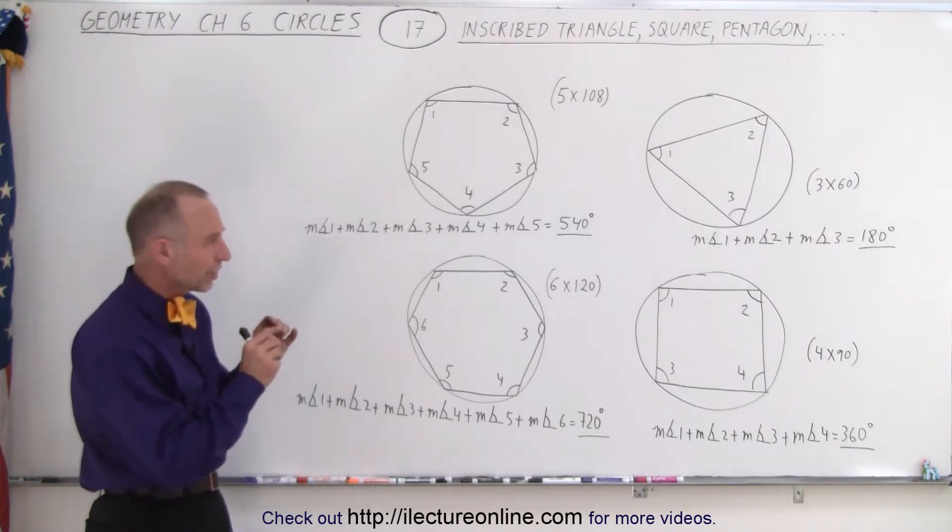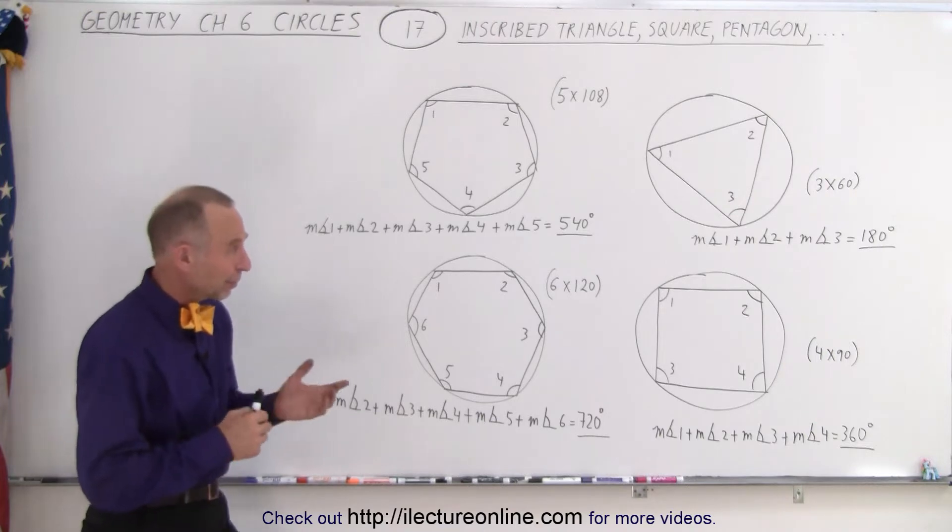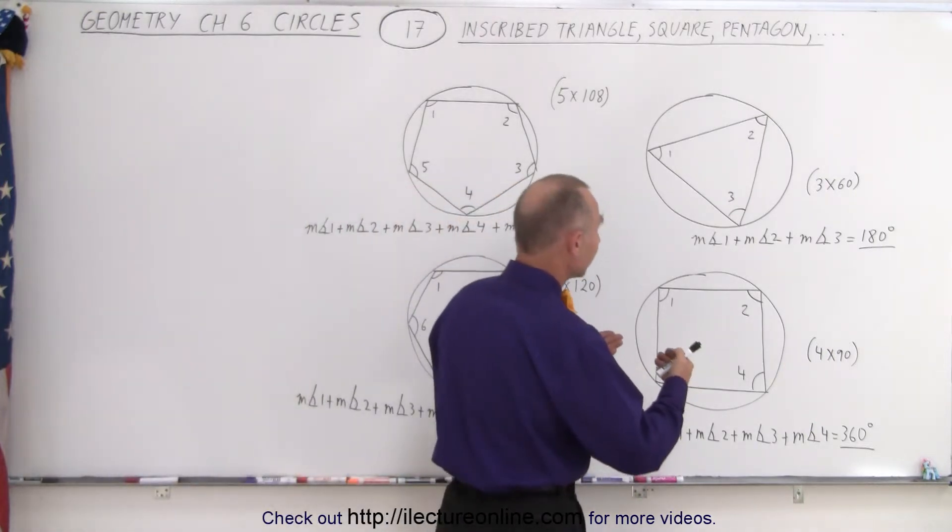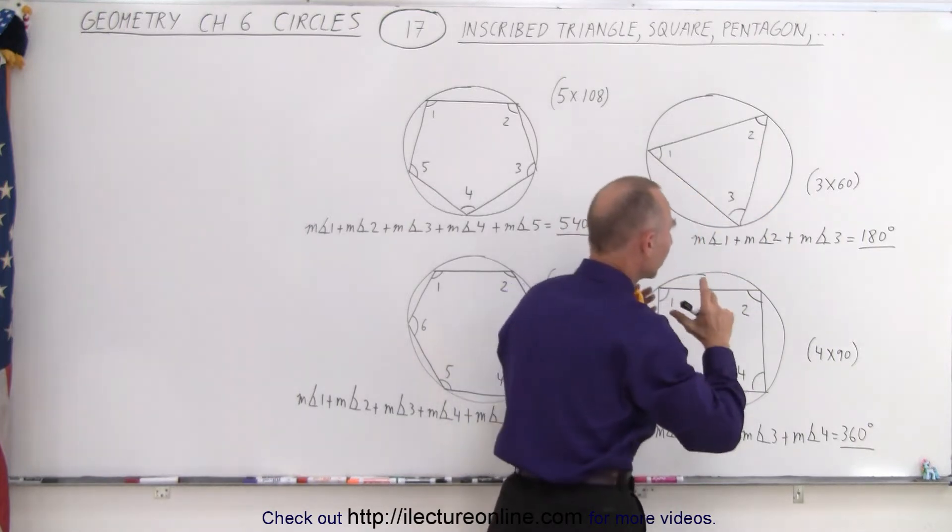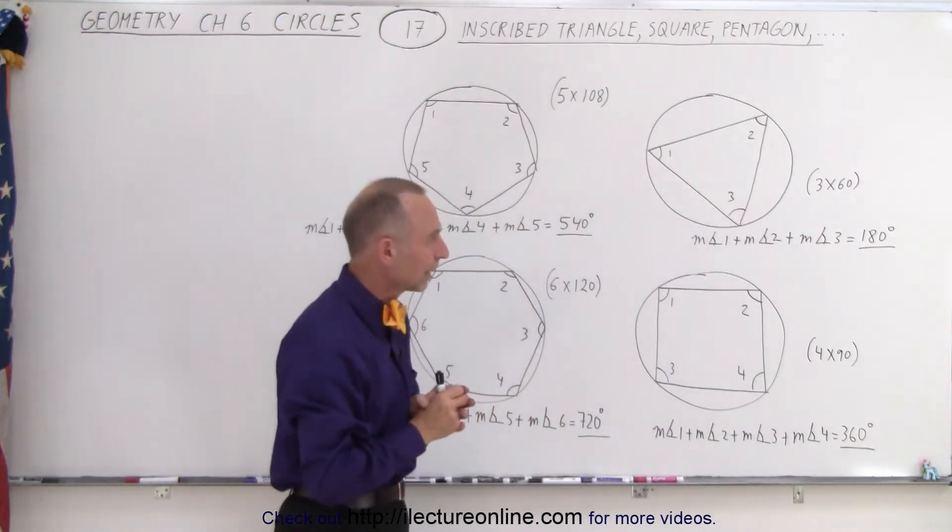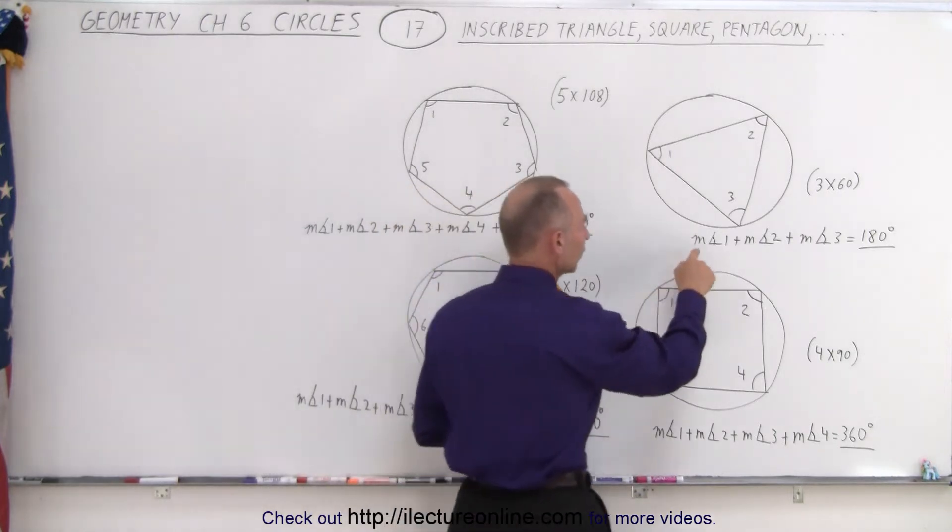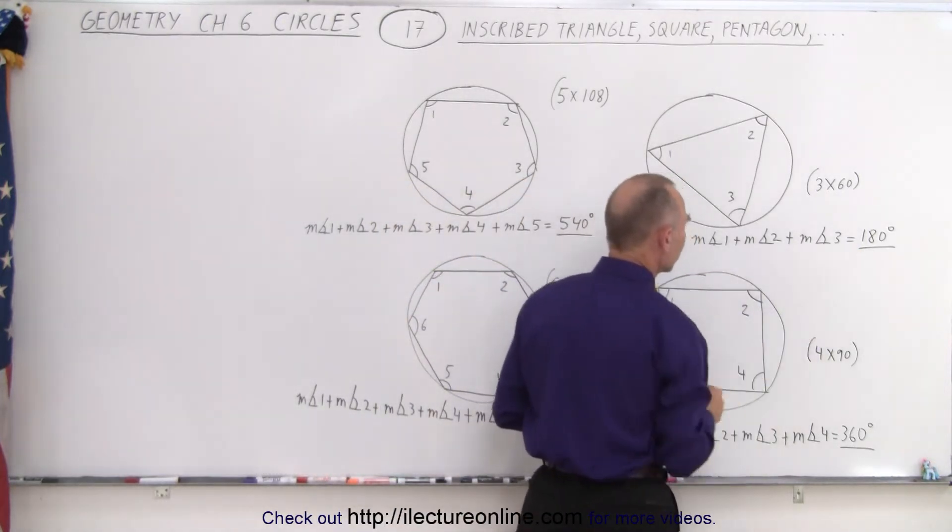And notice there's some interesting features we should look at and remember. So if we place a triangle inside a circle and if we inscribe it, which means that each of the corners touches on the edge of the circle, then if we add up the measures of the three angles, it adds up to 180 degrees.